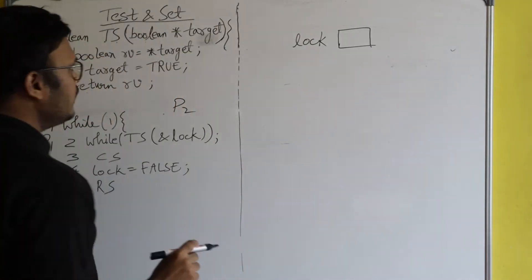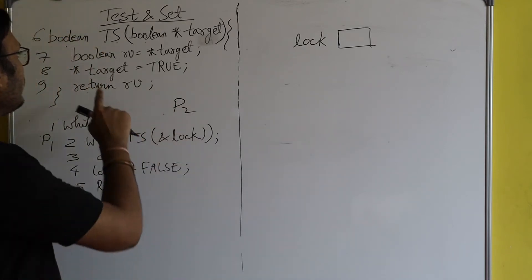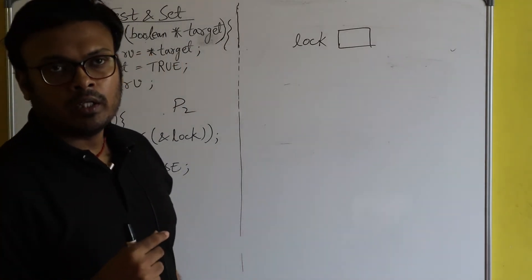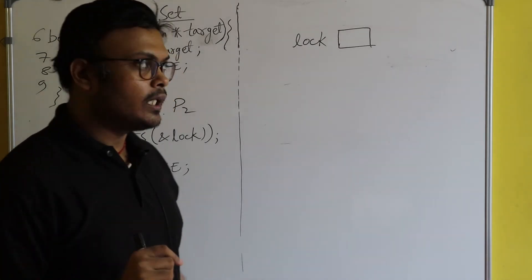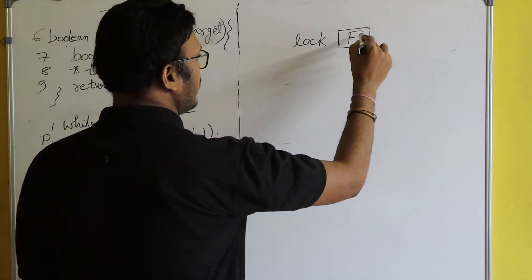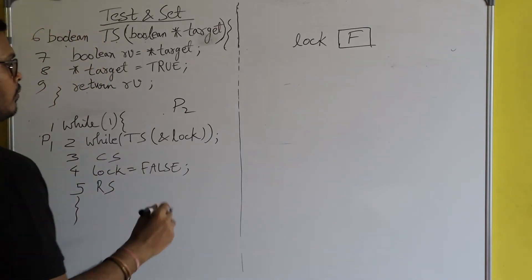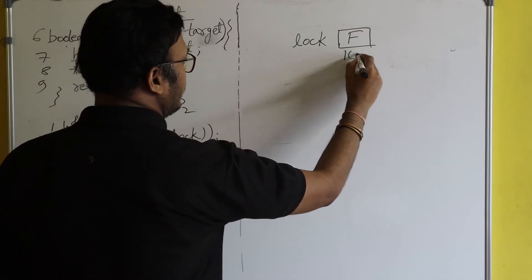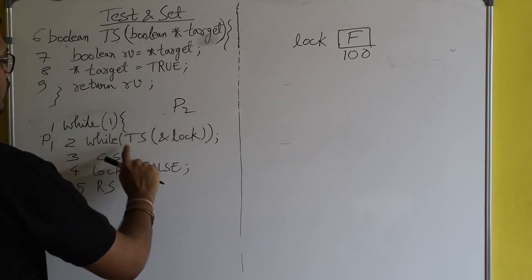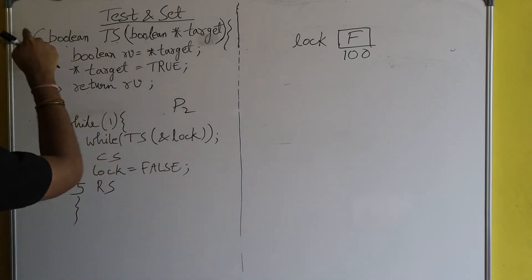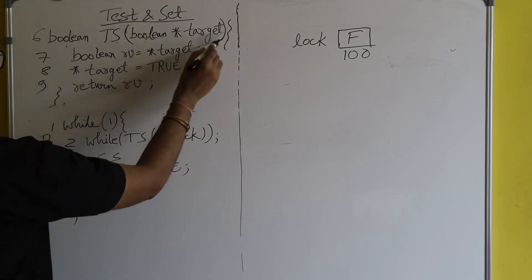We are using boolean values — true or false, not zero or one. The lock value is initialized as false, and the address of the lock variable is suppose 100. Now test-and-set function has been called, so let's go to the test-and-set function definition: boolean TS.